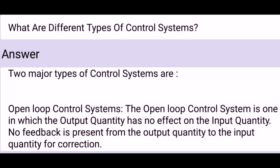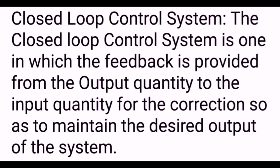What are the different types of control systems? There are two major types of control systems. The open loop control system is one in which the output quantity has no effect on the input quantity, and no feedback is present from the output quantity to the input quantity for correction. The closed loop control system is one in which feedback is provided from the output quantity to the input quantity for correction, so as to maintain the desired output of the system.